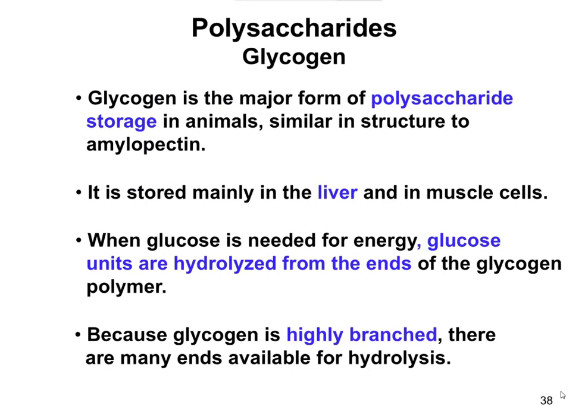Glycogen is probably the most important storage sugar for us as humans. We store glucose in the form of glycogen, mainly in the liver and muscle cells. Glycogen is a very highly branched form, very similar to amylopectin. It's almost as if glycogen forms these balls full of glucose that have thousands of ends because of all these branch points — like a really puffy tree with a whole lot of branches. The more ends of the branches we have, the more energy we can get, because each of those ends, whenever we trim it, we can get glucose to use for energy. We hydrolyze the glucose off the end of the glycogen for energy to support all of our physiologic processes.